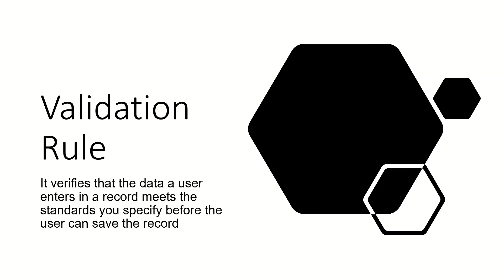First of all, what is a validation rule? It verifies the data which a user enters and checks whether it meets the standards you specify for that particular record the user is trying to save into the database. If the data doesn't meet the criteria of that validation rule, it will throw an error and you will need to rectify that error before you can save the record.